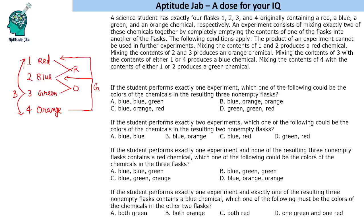The first question says: if the student performs exactly one experiment, which one of the following could be the colors of the chemicals in the resulting 3 non-empty flasks? The student conducts one experiment, and there are 6 possible pairs he could mix. We will go by options, because that is the best way to solve this question - otherwise we'd have to check 6 cases.